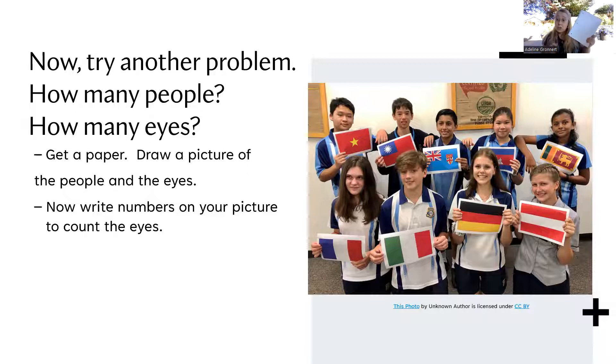Once you finish that, write the counting numbers next to their eyes so you can show how you found out how many eyes they all had. If you need to pause the video here to get that work done, go ahead and pause the video right here. Once you're done with your work, we'll go on to the next part.